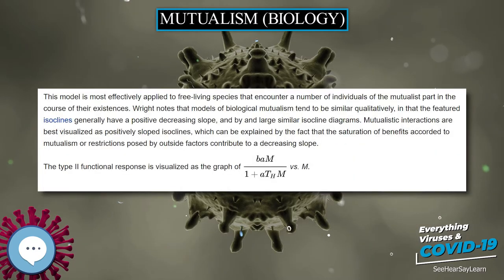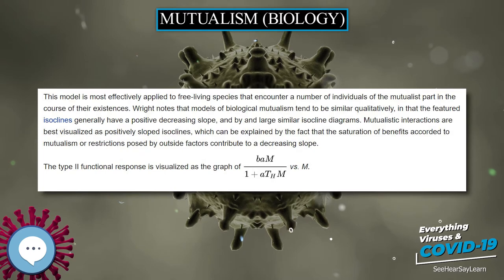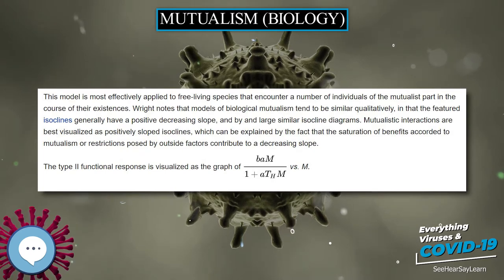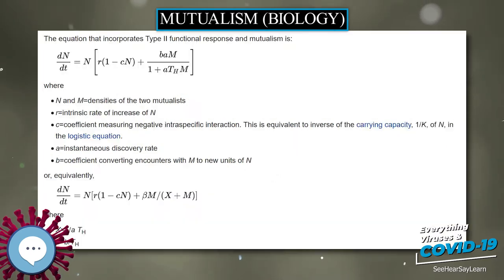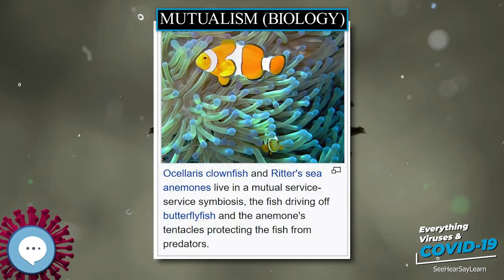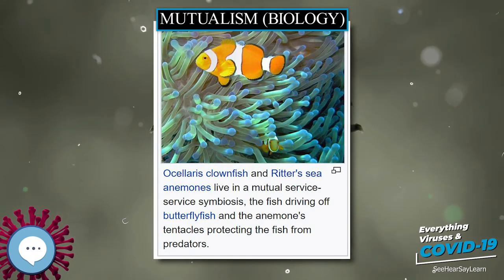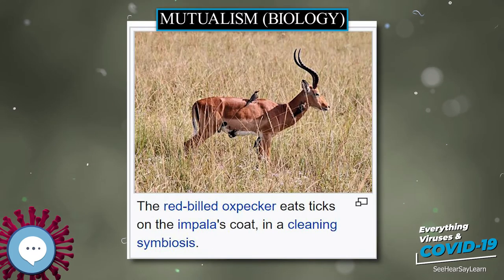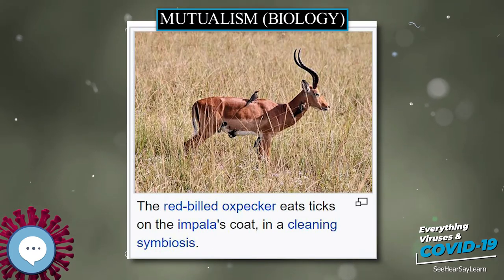Service-resource relationships are common. Three important types are pollination, cleaning symbiosis, and zuchery. In pollination, a plant trades food resources in the form of nectar or pollen for the service of pollen dispersal.